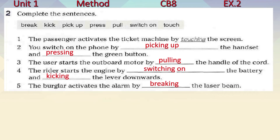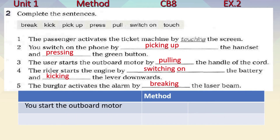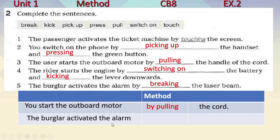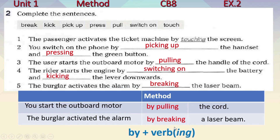Which word comes before the verbs? By touching, by pulling, by breaking — you will notice that the word 'by' comes before each verb. Therefore, when you want to explain how you do something, like to start the outboard motor, and you want to explain the method, you say 'by pulling the cord.' Or: 'The burglar activated the alarm by breaking the laser beam.' So you use 'by' followed by a verb with -ing.